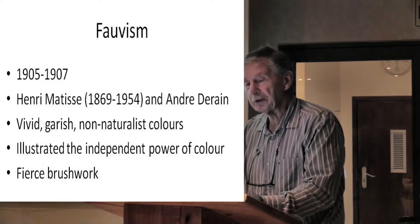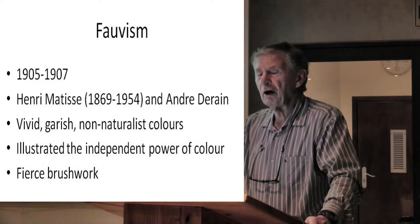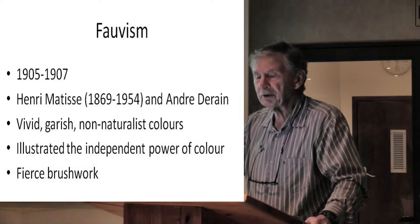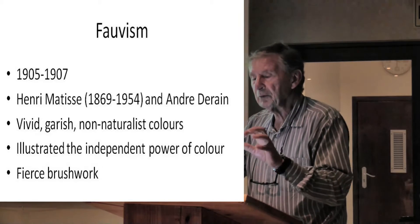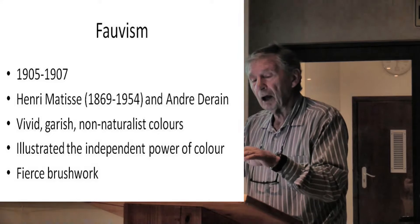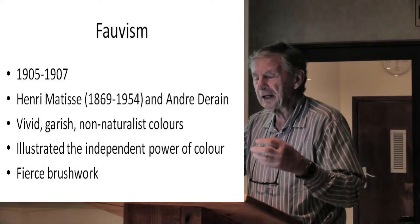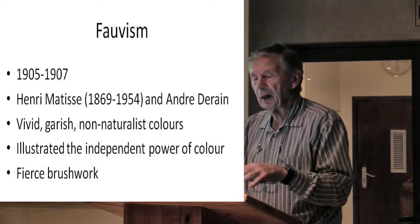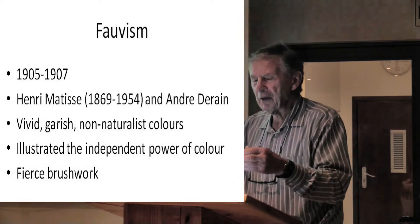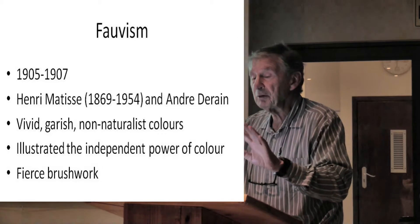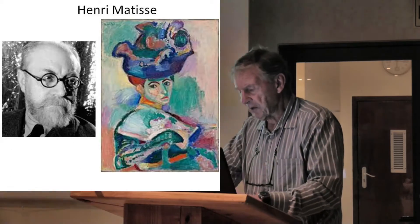This took place basically 1905 to 1907. The famous ones were Henri Matisse and André Derain. They painted vivid, garish, non-naturalistic colours, but they illustrated the independent power of colour. Colour became an important thing, and they didn't have timid brushwork like the Impressionists — they had fierce brushwork. They really went fierce.